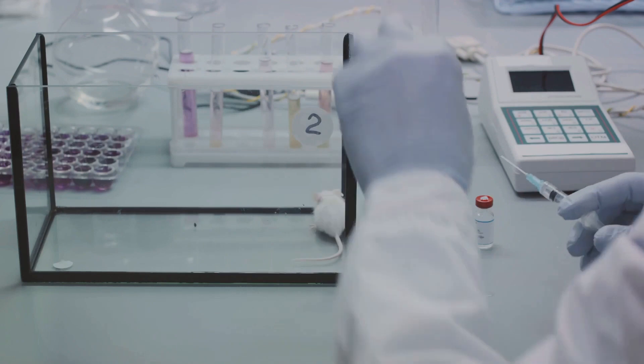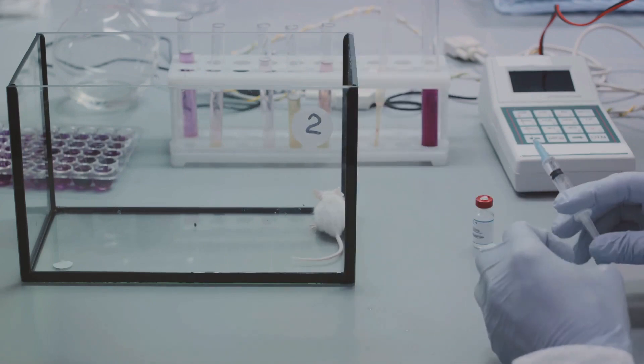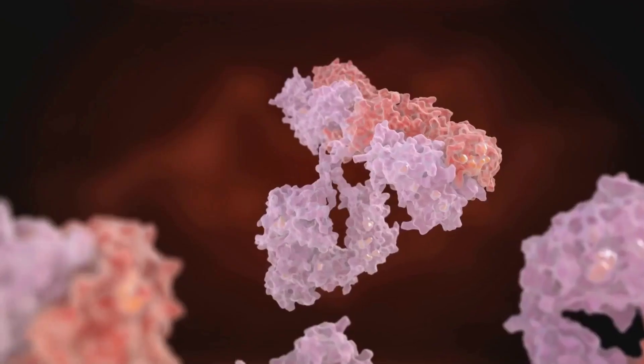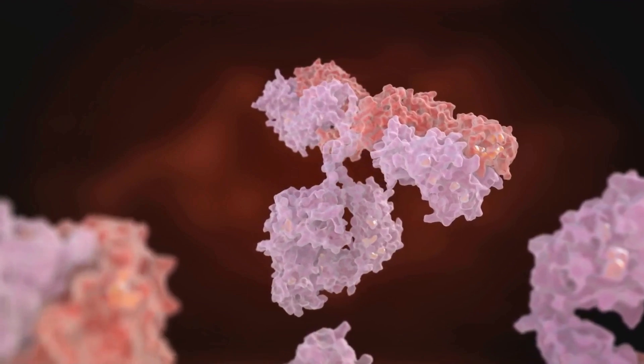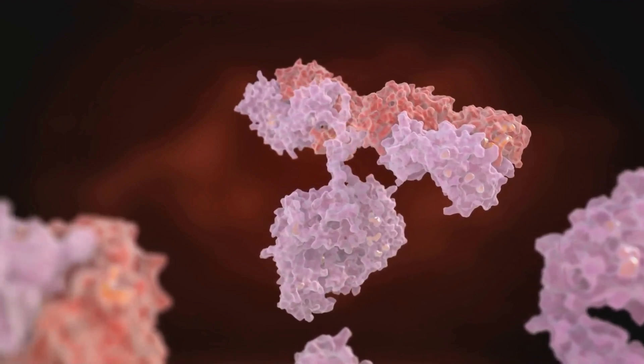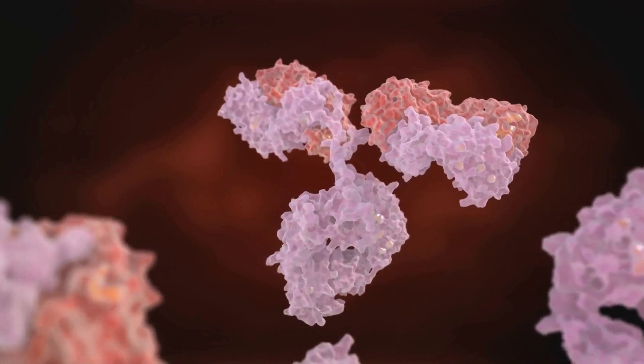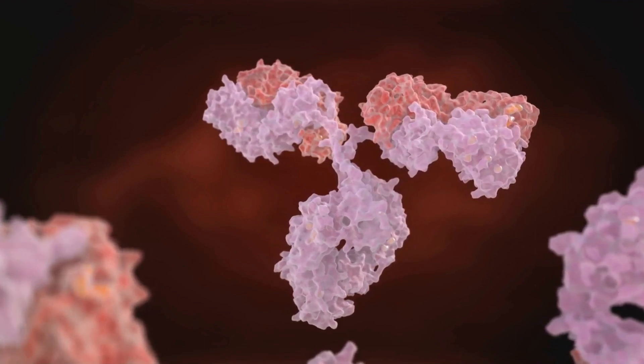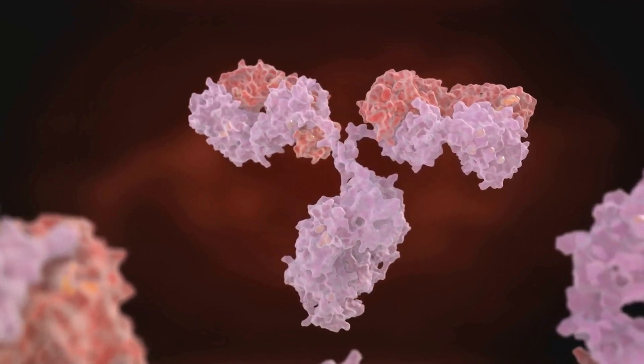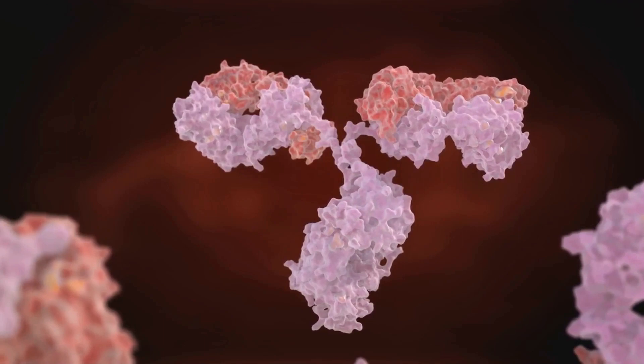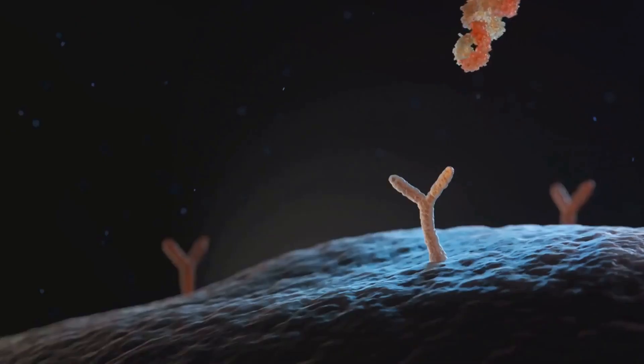These are not your average molecules. They are created by injecting a specific antigen into a mouse, which then produces B cells to combat the antigen. These B cells are then fused with myeloma cells to create a hybridoma, a cell factory if you will, churning out identical antibodies. Hence the term monoclonal.